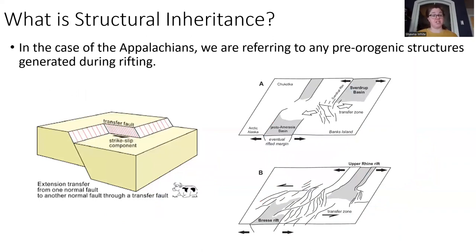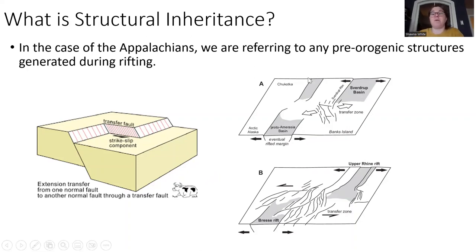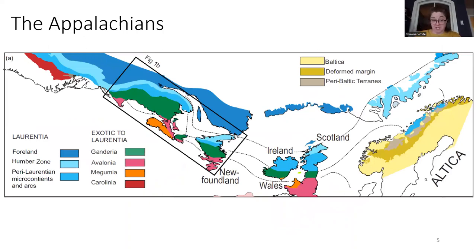Those pre-orogenic structures would be those generated during rifting. We know pre-orogenically we had rifting and opening of an extensive ocean basin. On a small scale, these structures would be normal faults offset by and accommodated by transfer zones. To a larger degree, also talking about the margins of those basins — the irregular geometry or margins of an extensive ocean basin due to the complex geometries of these fault systems.